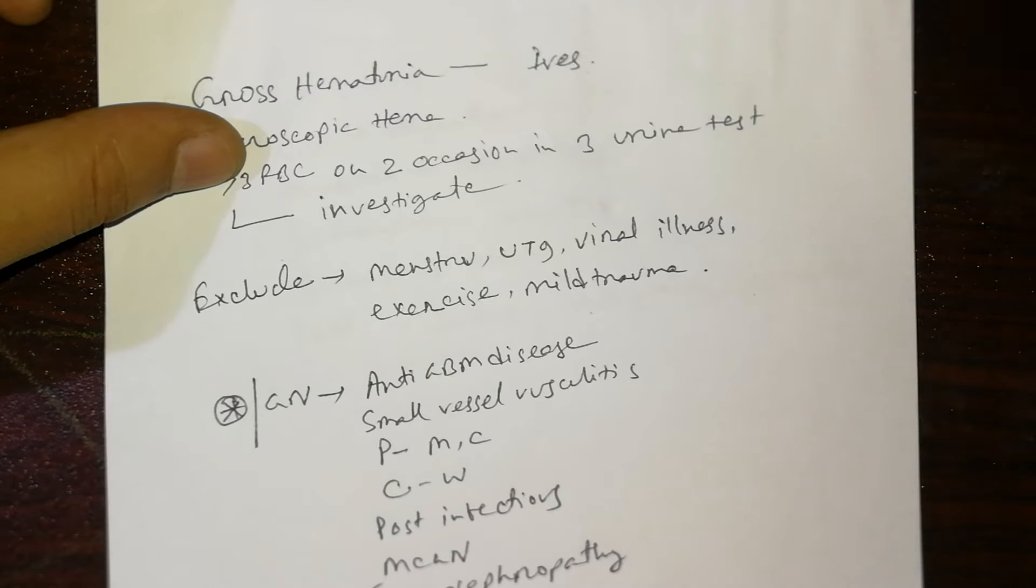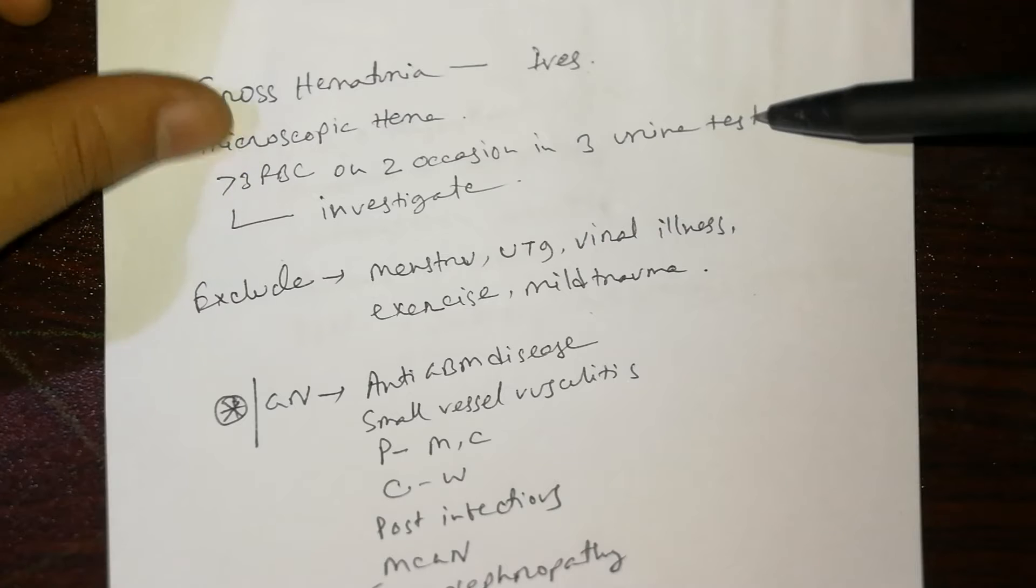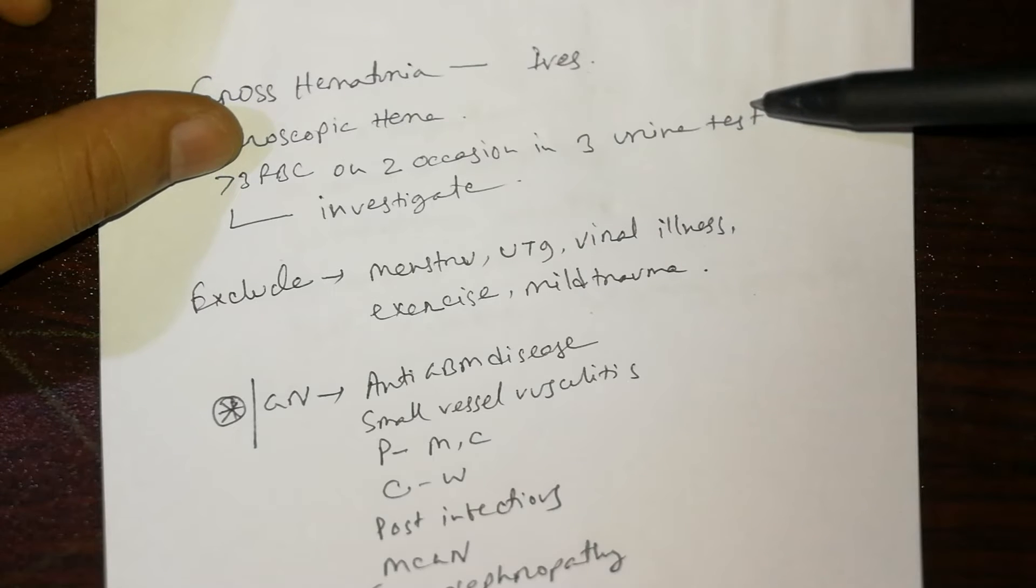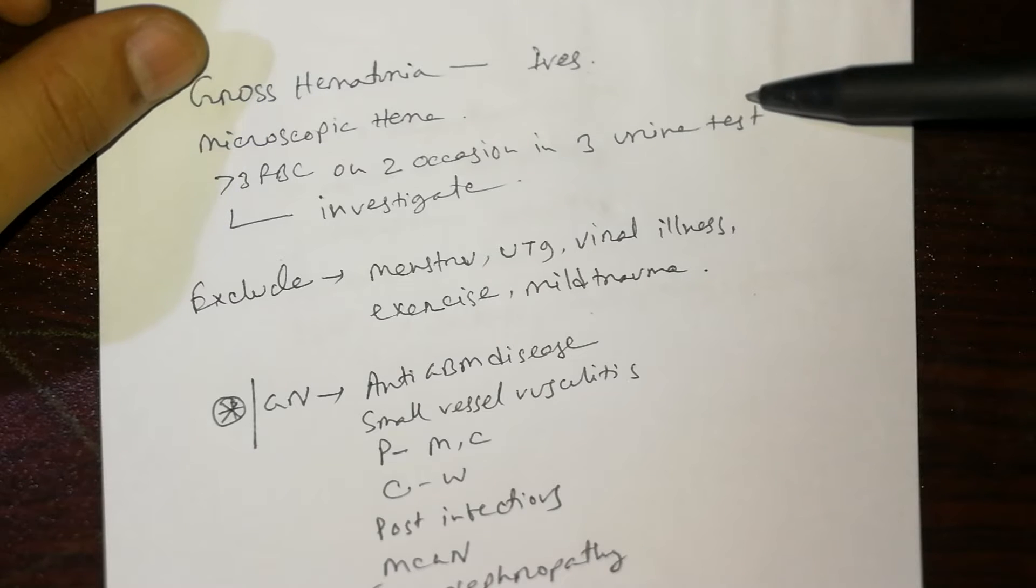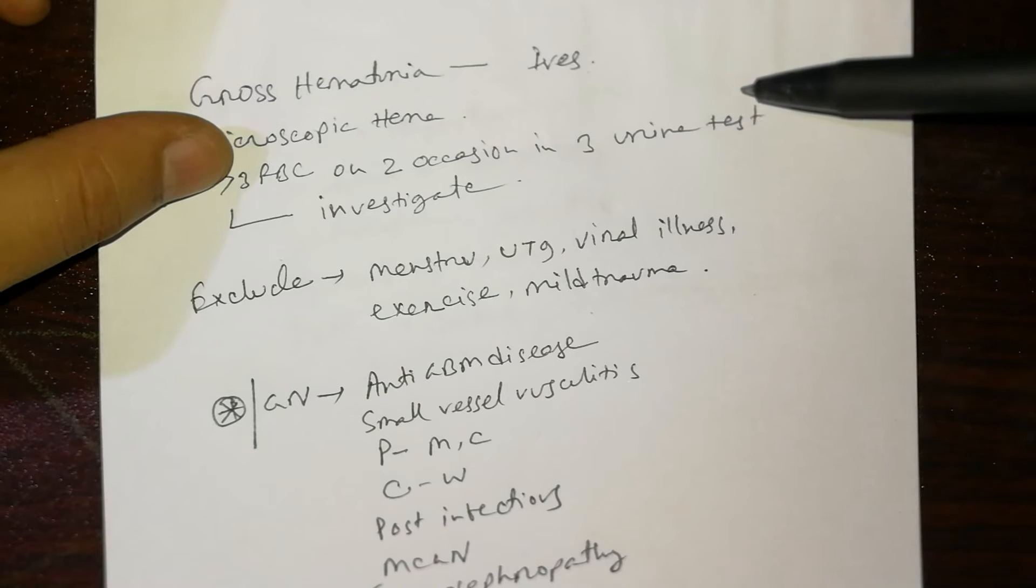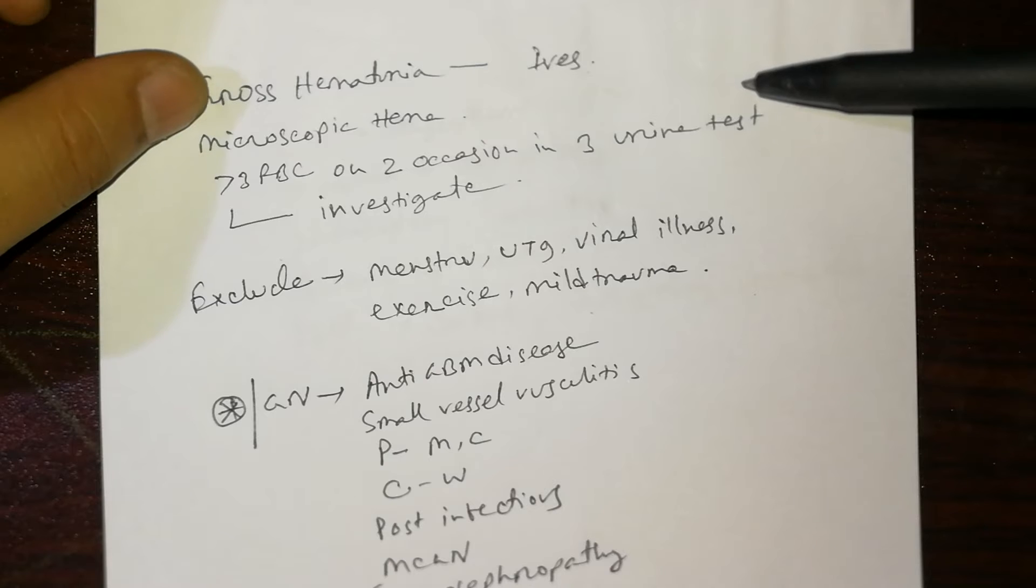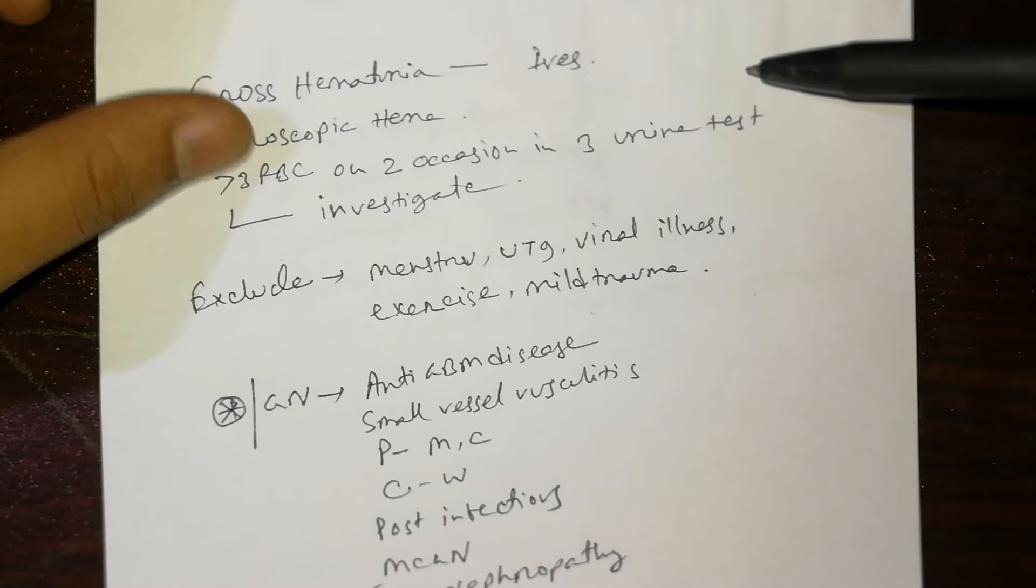If microscopic hematuria is present on two occasions in three consecutive urine tests, it may or may not be pathological. You must confirm the patient has microscopic hematuria with more than three RBCs per high power field on two occasions within three urine tests. If two tests are positive, then investigate.